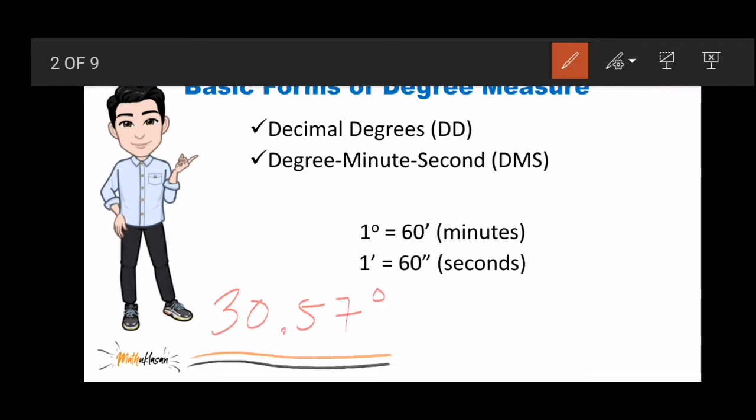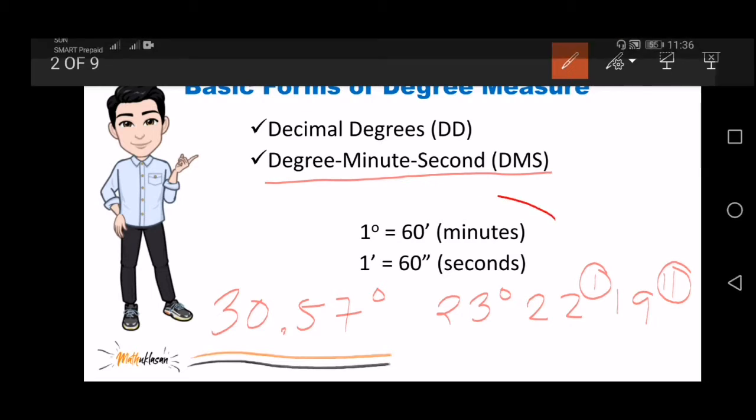The second type is called degree minute second. Halimbawa, 23 degrees, 22 minutes, and 19 seconds. Notice that I use apostrophe for the minute and double apostrophe for the seconds. At ang kailangan lang natin tandaan ay ito: 1 degree is equal to 60 minutes and 1 minute is equal to 60 seconds.